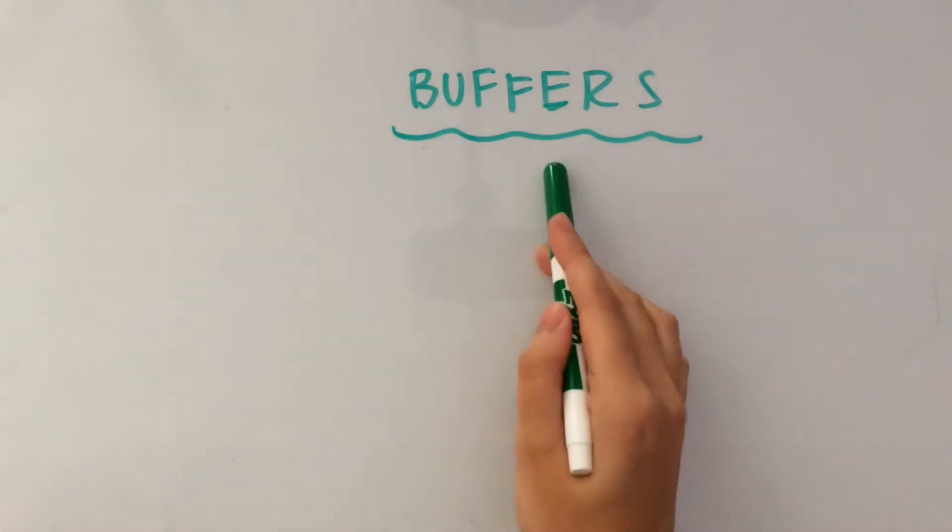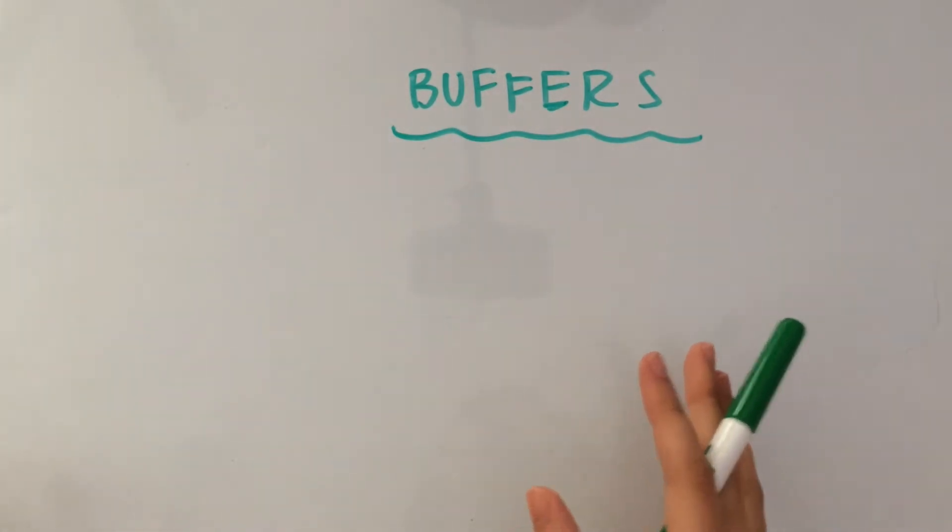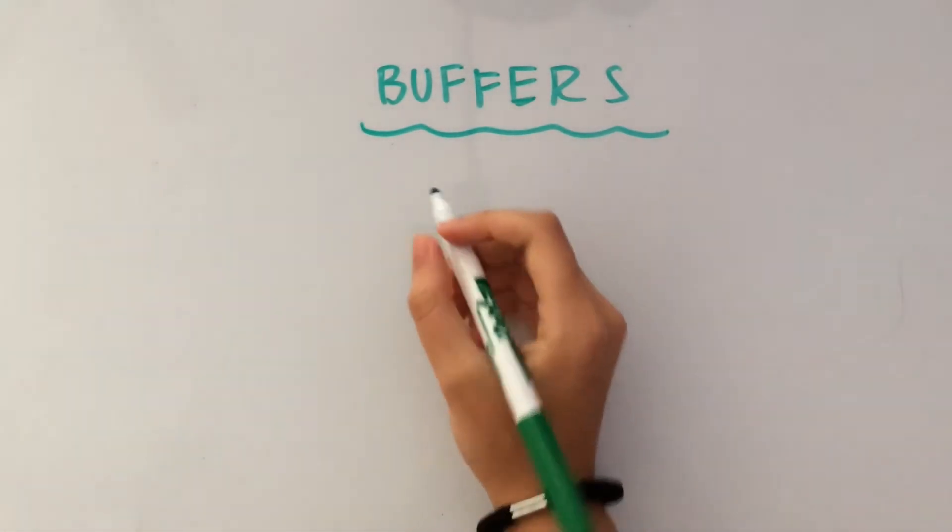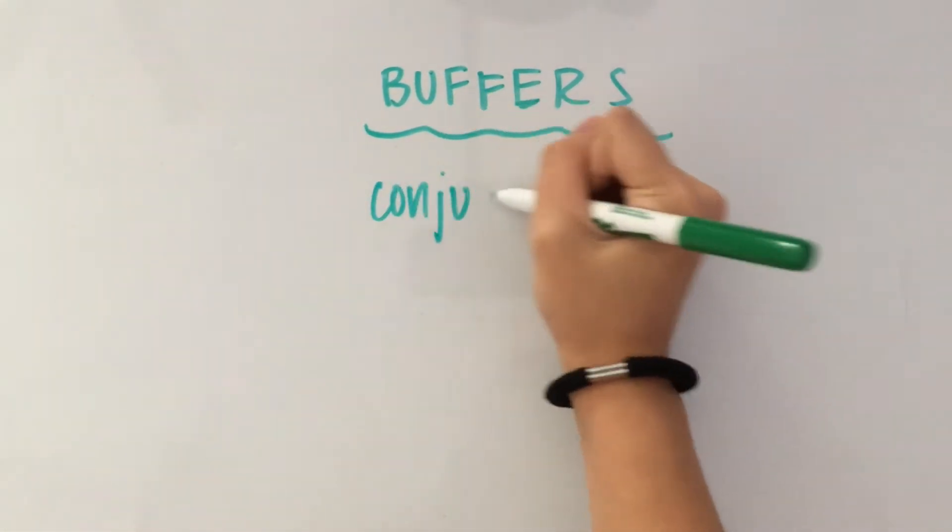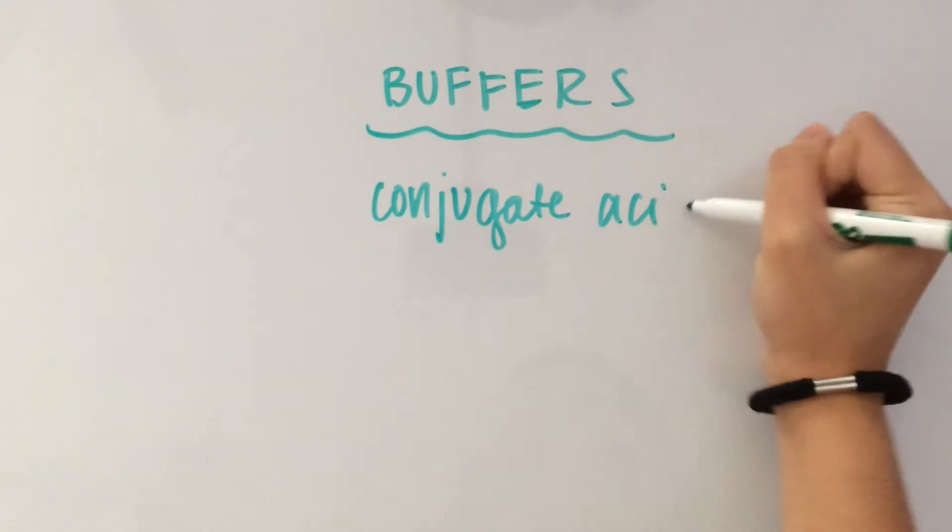So buffers are seen mostly in our blood because they maintain our pH at a steady rate, so if there's anything that enters the blood, the buffers are there to make sure that the pH doesn't change that much. So what buffers are really made of are basically conjugate acids and bases.